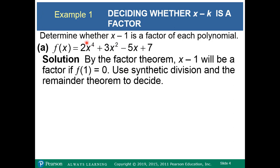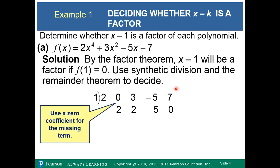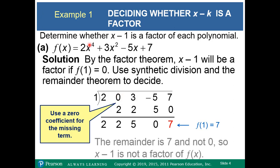We're going to use the Remainder Theorem, because the Remainder Theorem says that if the remainder is 0, then f of k is equal to 0, and then it has to be a factor by the Factor Theorem. So we're going to find whether f of 1 is equal to 0. Here's the polynomial — we're going to use synthetic division. Here are the coefficients, here's our value from x minus 1, so k is 1. We find that the remainder is 7, so f of 1 equals 7, not 0. Since the remainder is not 0, x minus 1 is not a factor.